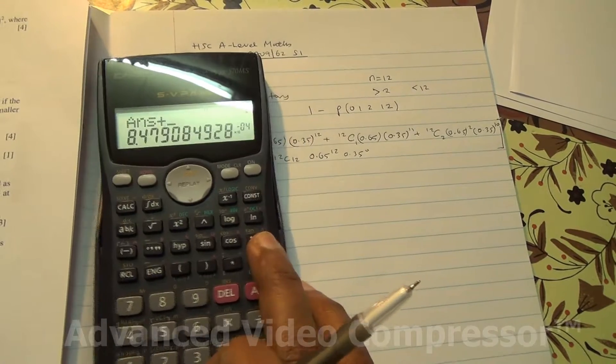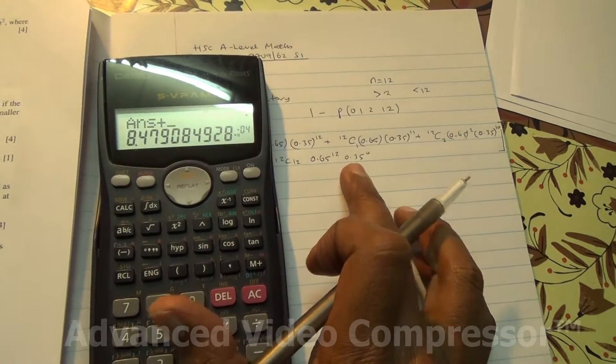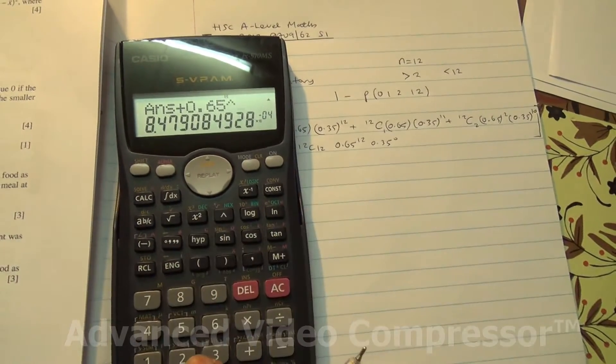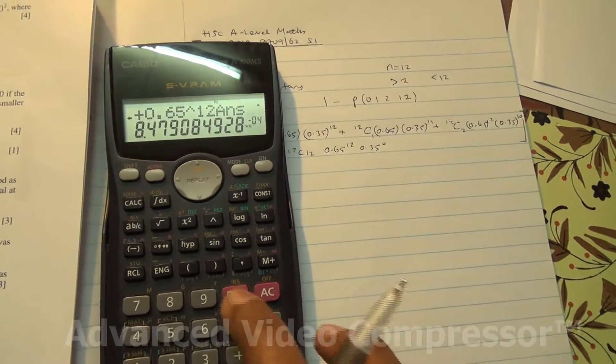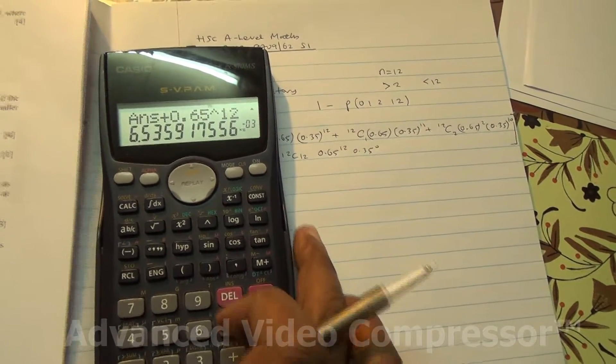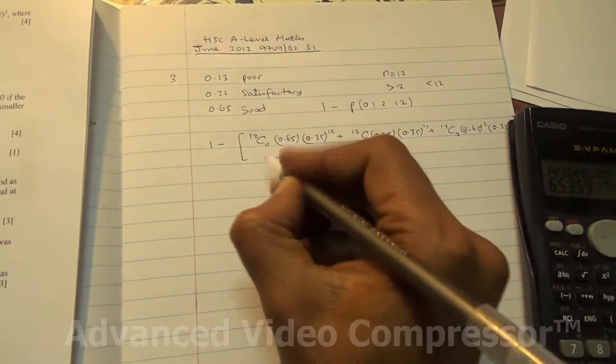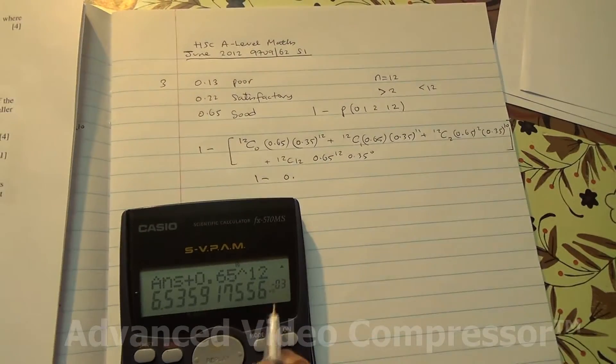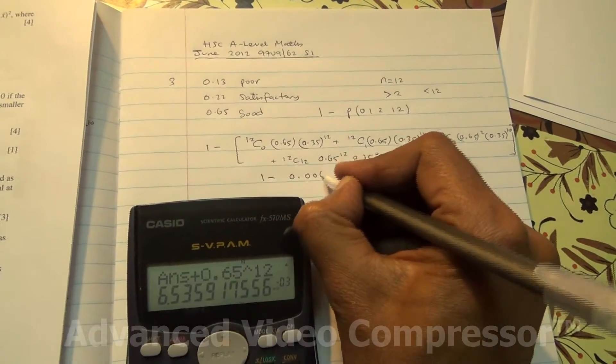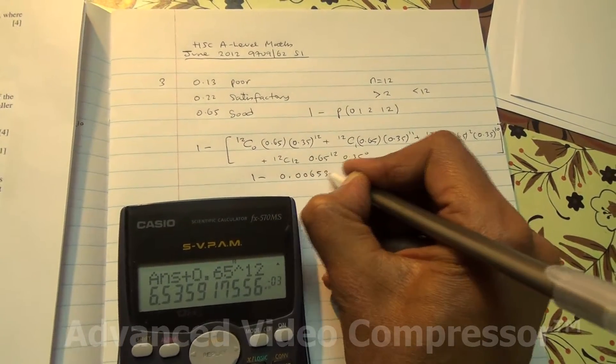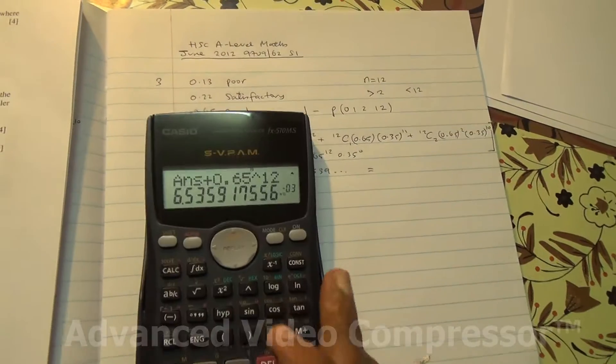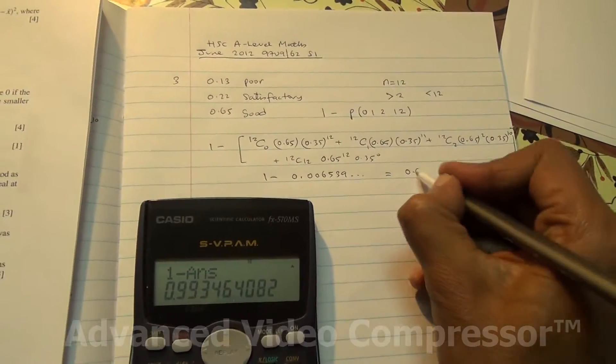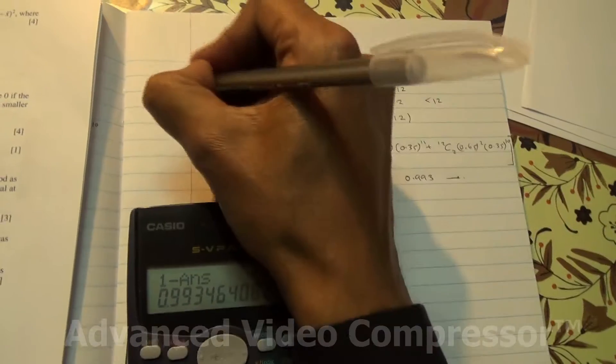plus the last one is going to be 0.65 to the power of 12, and that's going to give us this much. So I'm going to say 1 minus 0.006539, and so on. So if you do that, you're going to get 0.993. Here we are for the first part of the question.